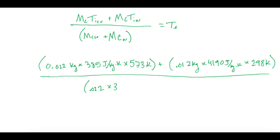Now we're going to divide all of this by the mass of the copper, which was 0.022 times its specific heat, 385 joules per kg K, and then we're going to add the mass of the water, which was 0.12 kilograms, times its specific heat, 4190 joules per kilogram times kelvin. All that is equal to the final temperature of the copper and the water since they reach equilibrium.